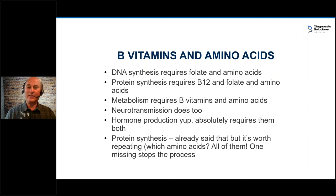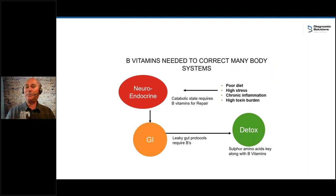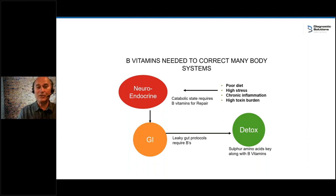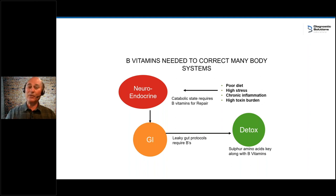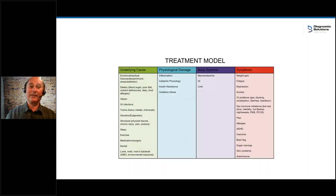You need B vitamins to correct the neuroendocrine system and the GI tract, and to detox properly. You need sulfur amino acids to detox. You need glutamine — an amino acid — to heal a leaky gut. When you're in an adrenal-exhausted state, you're breaking down your amino acids — that's a catabolic state, where you're using amino acids for fuel when stressed. Amino acids get depleted when we're in trouble, and we need to replete them to get the neuroendocrine, GI, and detox systems working.